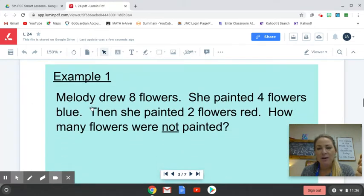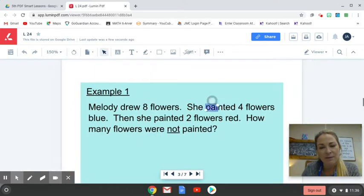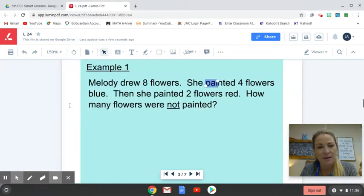I'm going to pull up our first example here, and I'm going to zoom out a tiny bit so you have more room to see the entire problem. I'd like you to pause, please, read this example, and try to think about how this would look like as an expression written out. So I'll read it really quickly, then I would like you to pause it and give this a try, and then I will unpause my video showing my work on how to solve this problem. Melody drew 8 flowers. She painted 4 flowers blue, and she painted 2 flowers red. How many flowers were not painted? Go ahead and pause and give this one a try.